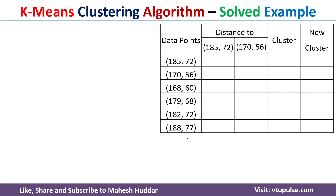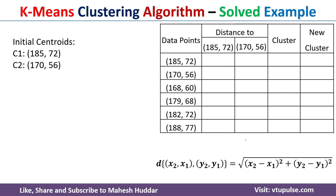These are the six data points given to us, and C1 and C2 are the initial centroids. We need to calculate the distance from each data point to the initial centroids using Euclidean distance. The Euclidean distance formula is: square root of (x2 - x1)² + (y2 - y1)². The distance from the first data point (185, 72) to the first centroid (185, 72) is square root of (185 - 185)² + (72 - 72)², which equals 0.